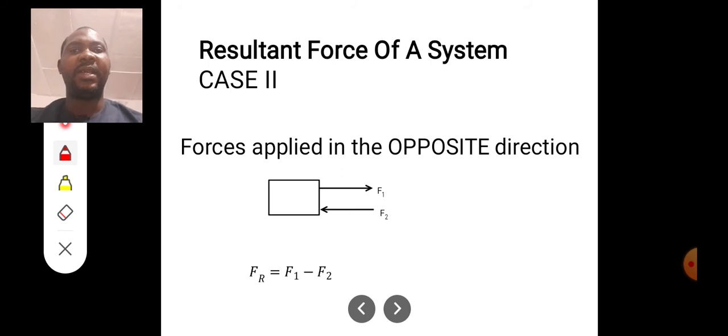But if the force applied is traveling in opposite direction, resultant force is F1 minus F2. If two forces on a body are traveling in opposite direction, you just subtract to get the resultant force.